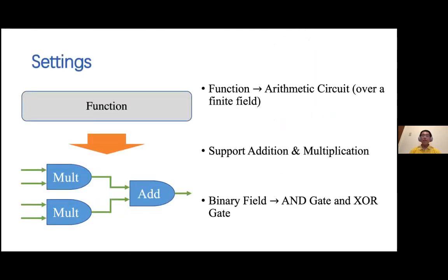Usually, the function we want to compute is represented by a circuit, and here we choose to use an arithmetic circuit over a finite field. The circuit supports addition and multiplication operations. If the field is a binary field, then an addition gate corresponds to an XOR gate, and a multiplication gate corresponds to an AND gate. We can use these two kinds of gates to represent any computable function. The reason for using circuits to represent functions is to reduce the task of constructing protocols to computing addition and multiplication operations.